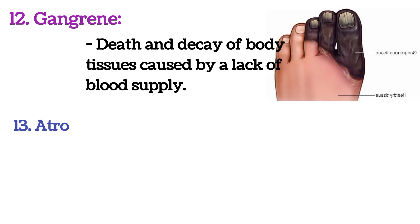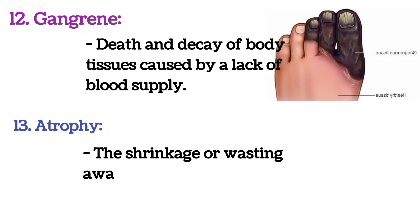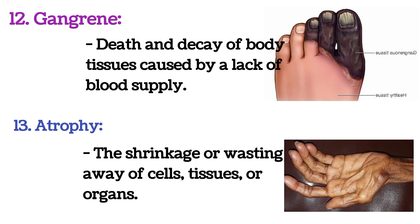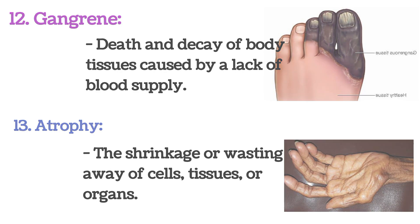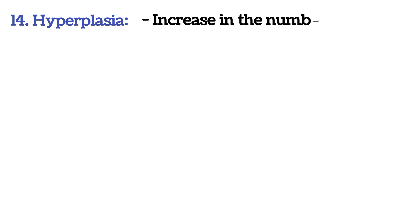13. Atrophy: The shrinkage or wasting away of cells, tissues, or organs. 14. Hyperplasia: Increase in the number of cells in a tissue or organ.